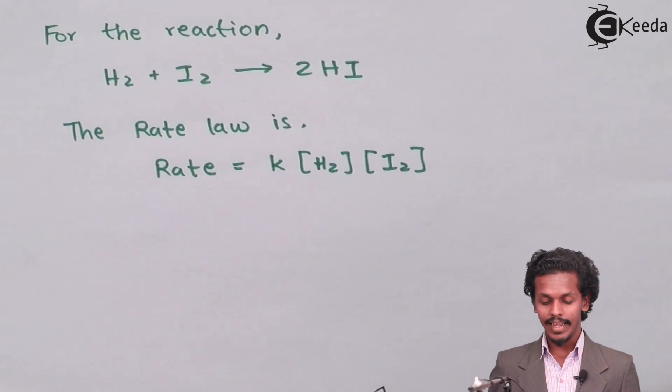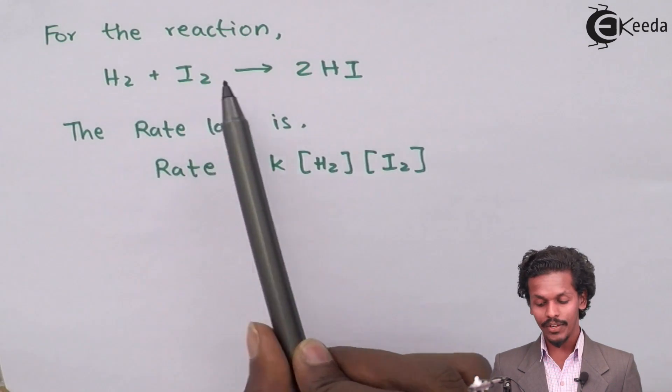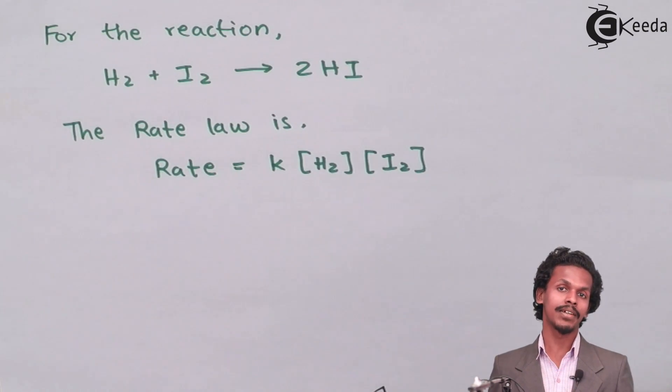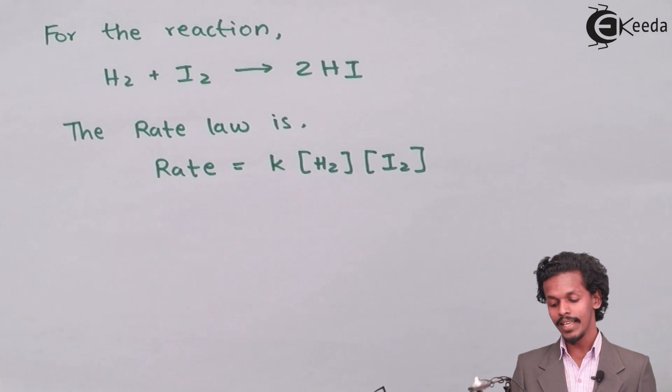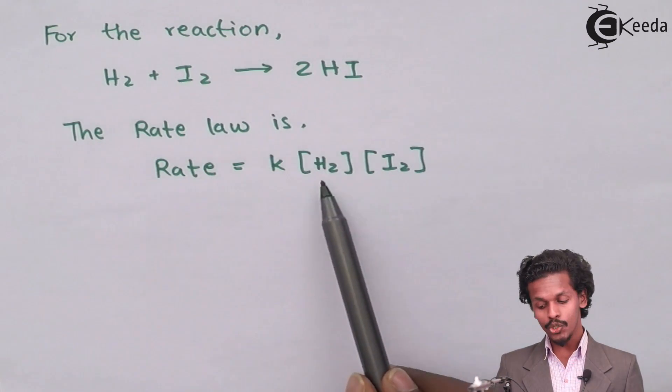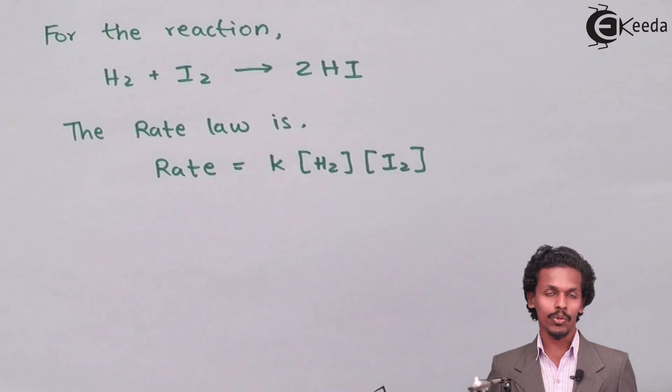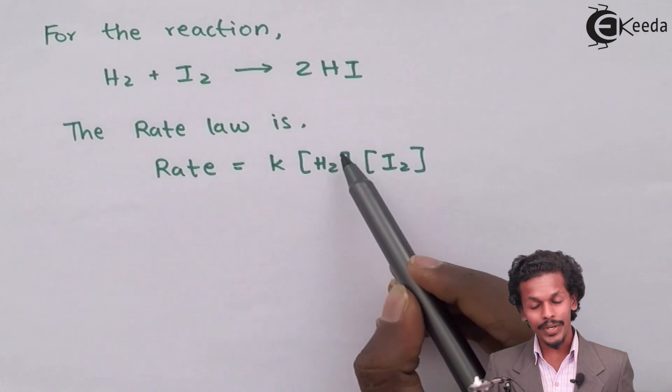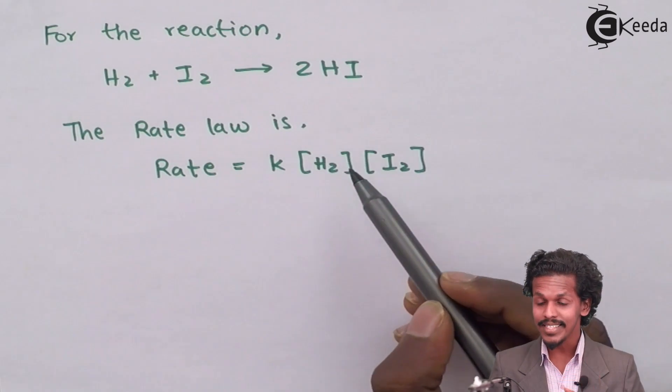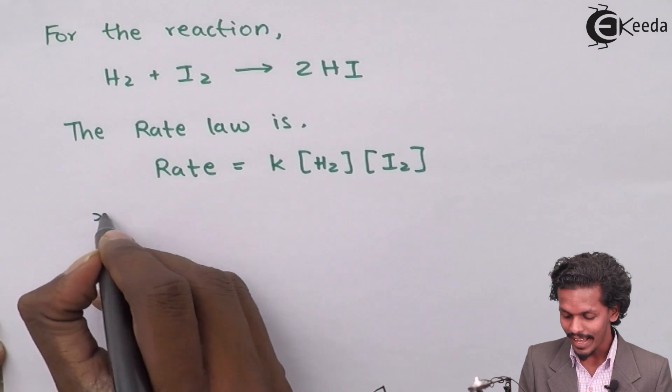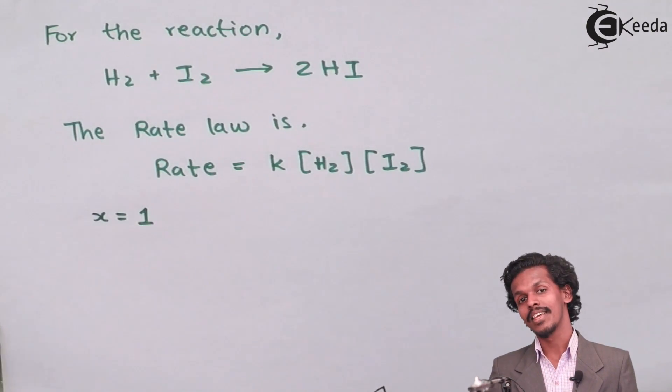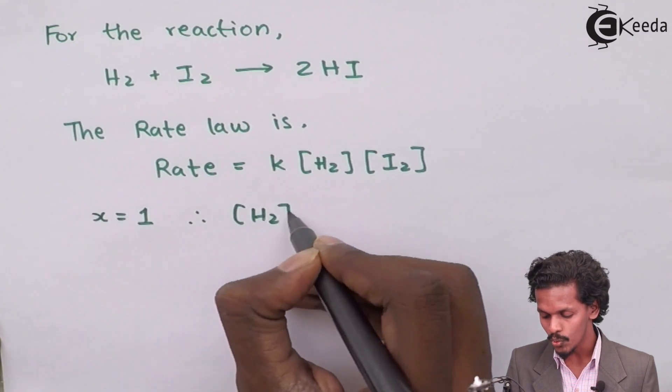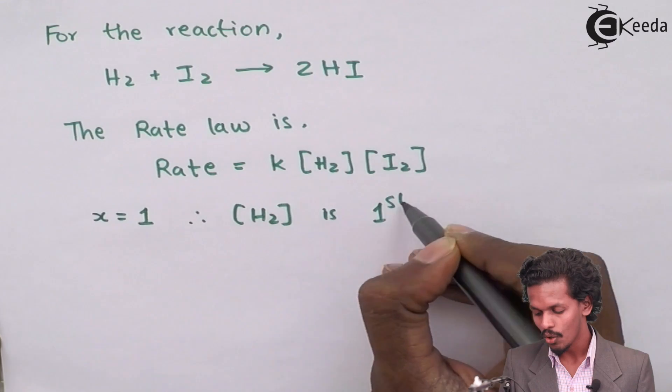I have mentioned an example like H2 plus I2 will give you 2 times HI. So the rate law that has been mentioned for this equation was found to be rate equals K times H2 into I2. In this case, as you can see, there should have been a presence of H2 raised to X, which is already there. But in this case, this X is 1.